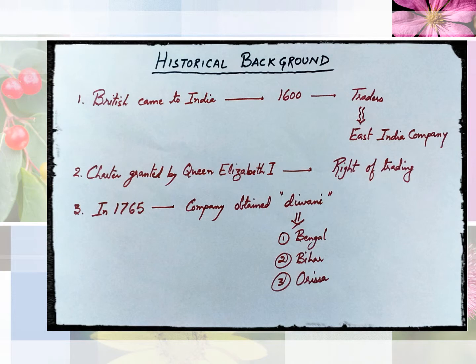In other words, the Diwani right was given by the Mughals to the British so that they would now be able to take revenue from Bengal, Bihar and Odisha, and give civil justice to the people living there. This was a major blow to society there, because now the British, as the East India Company, were directly ruling that region.